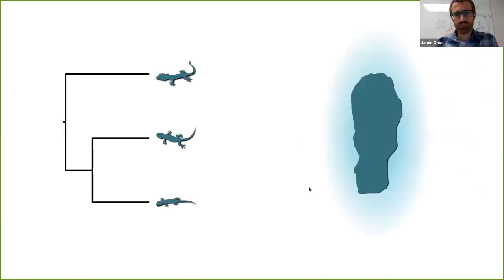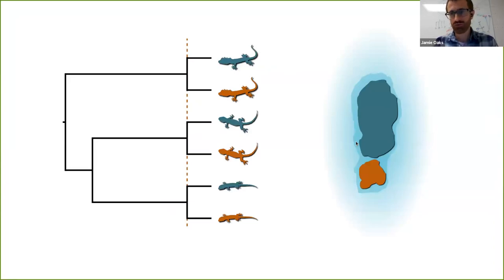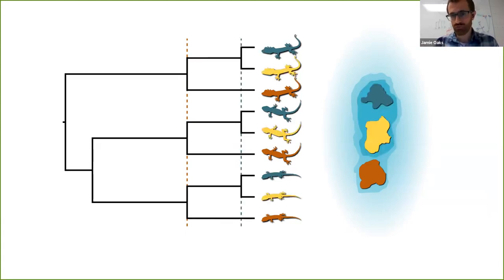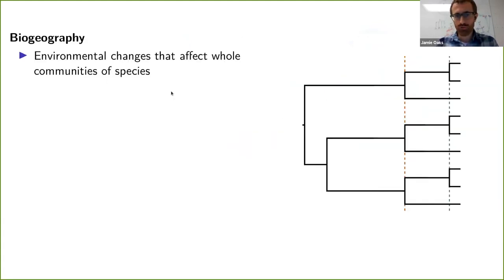Here's an example. Let's use three species of lizards co-occurring on an island. We can imagine that at some point sea levels rise and fragment that island, causing all three species to diverge — that's causing a shared divergence, clearly violating the assumption of independent divergences across the tree. And we can imagine sea levels rise further, causing another bout of shared divergences. That's a biogeographic example of processes that can cause shared divergences across the phylogeny.